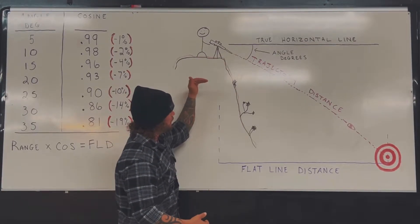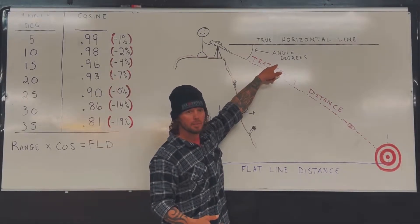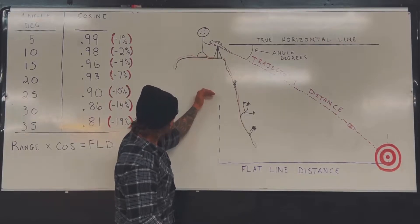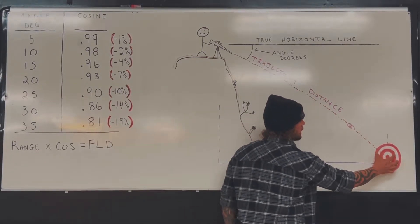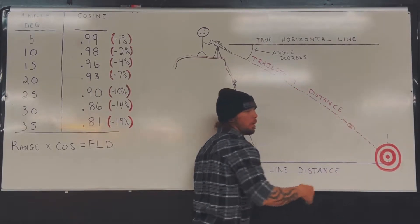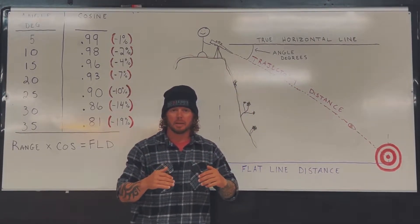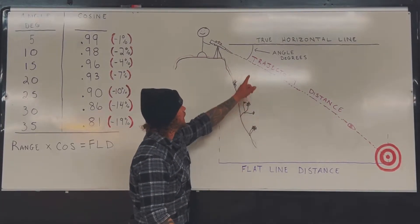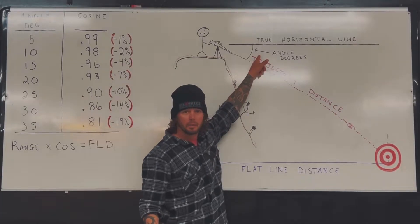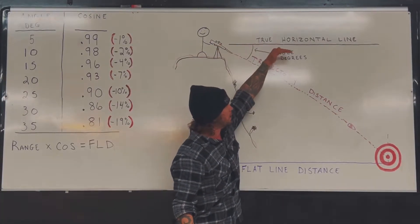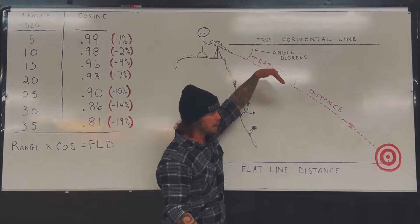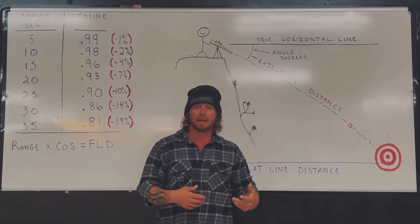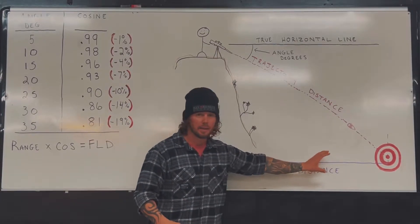So based off of our angle of degrees, we need to determine what our flat line distance is. If we were to bring our shooter down here or bring us up here, what would that straight line distance be where gravity is pulling down on the projectile? The way that we do this is by understanding what our angle to the target is. From true horizontal line, aiming down, are we at a 10, 15, 20 degree angle, and how does that relate to what the flat line distance would be?